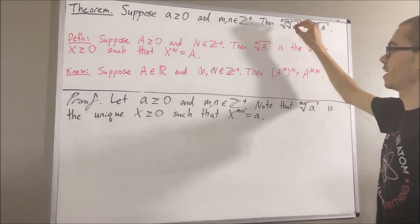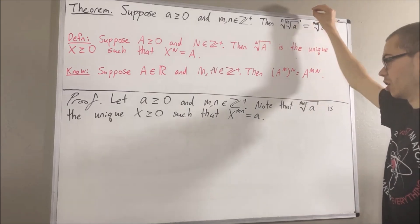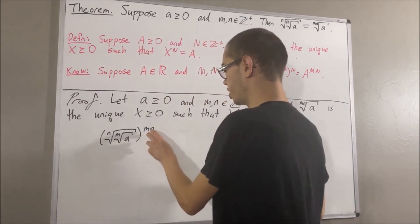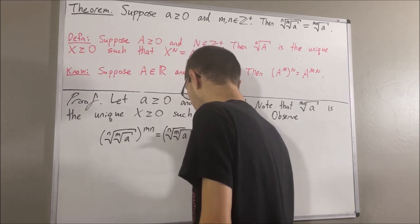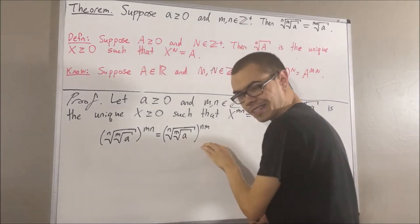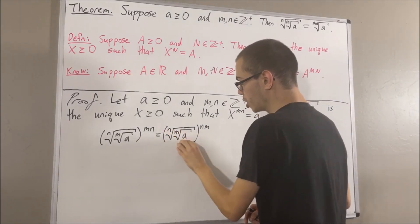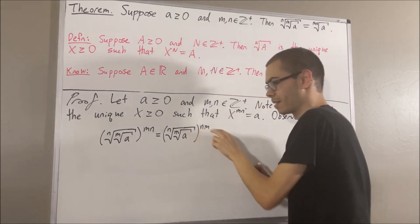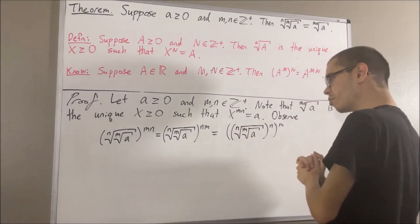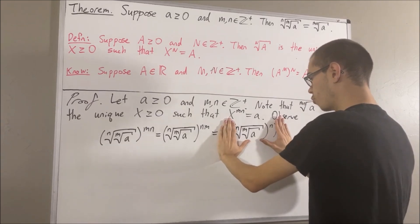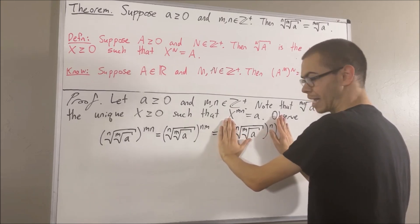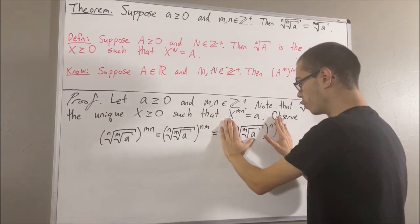So let's show that if we take the nth root of the mth root of a raised to the power of m times n, we get a. I'm just going to swap these two around. And from the property of positive integer exponents, this is really equal to the nth root of the mth root of a to the power of m, raised to the power of n. Now notice, inside the outermost parentheses, we have the nth root of a number to the power of n, and we expect the nth root and the power of n to cancel out.